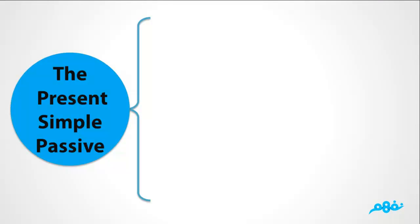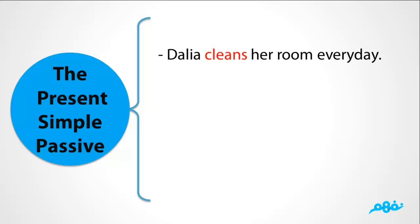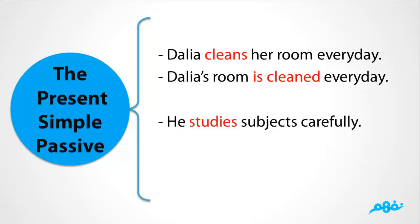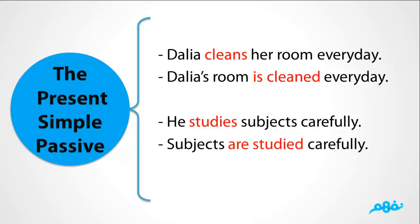The present simple passive: to change the present simple from active into passive, consider the following example. Active: 'Dahlia cleans her room every day.' Passive: 'Dahlia's room is cleaned every day.' Another example: 'He studies subjects carefully.' becomes 'Subjects are studied carefully.' So we use the verb 'to be' in the present, followed by the past participle.